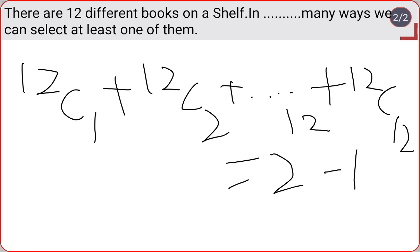minus 1. So if we solve this complete problem, we will be getting the answer as 4095. So in 4095 ways we can arrange these 12 different books on a shelf. This is the answer to this question.